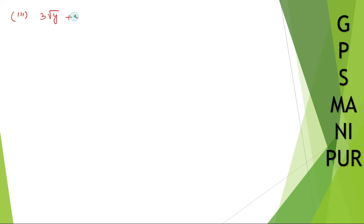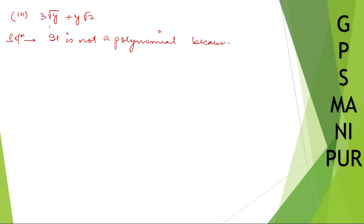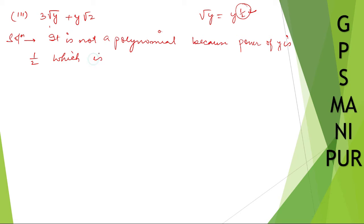Roman number three: 3√y plus y√2. If there is a root, it is not a polynomial because the power of y is 1/2 — we can write √y as y to the power 1/2. This is not an integer, so 1/2 is not a positive integer, which means this is not a polynomial.